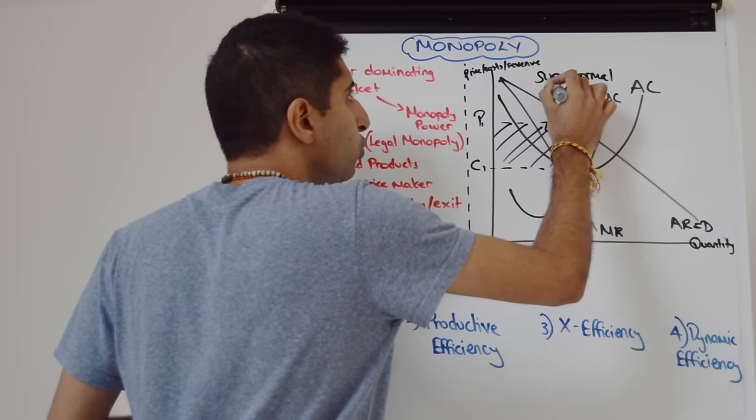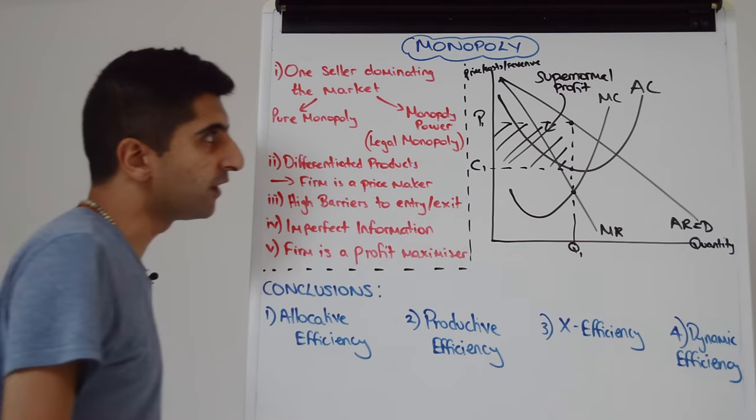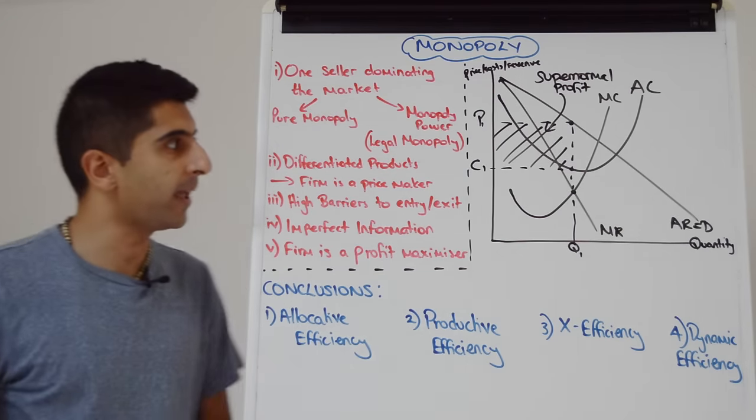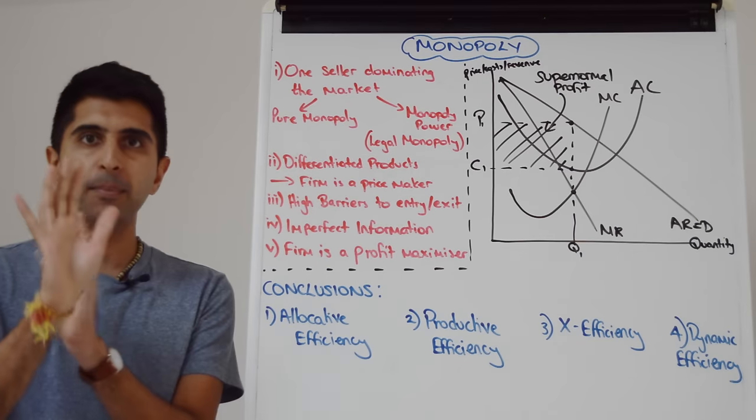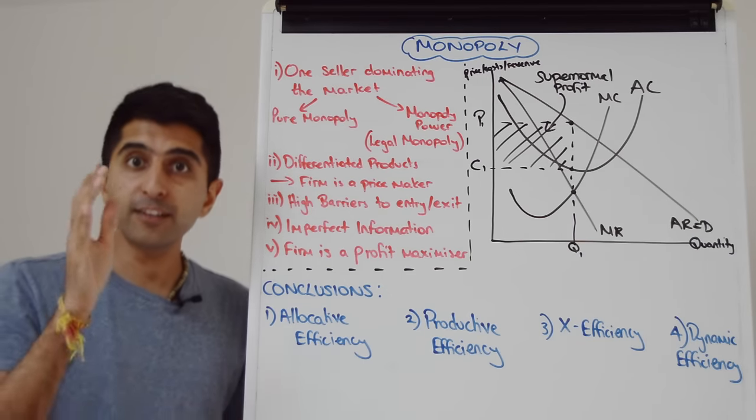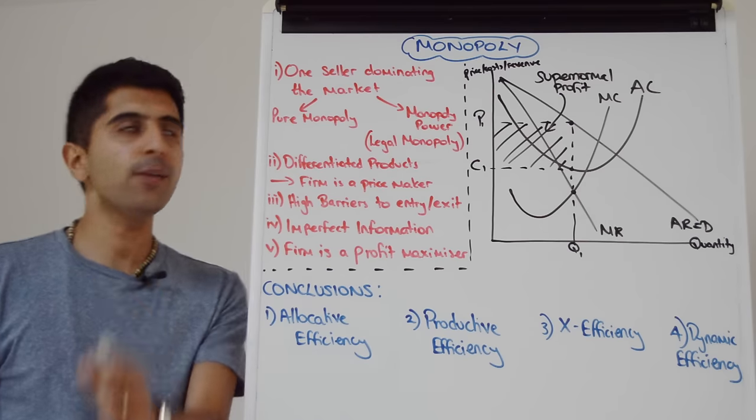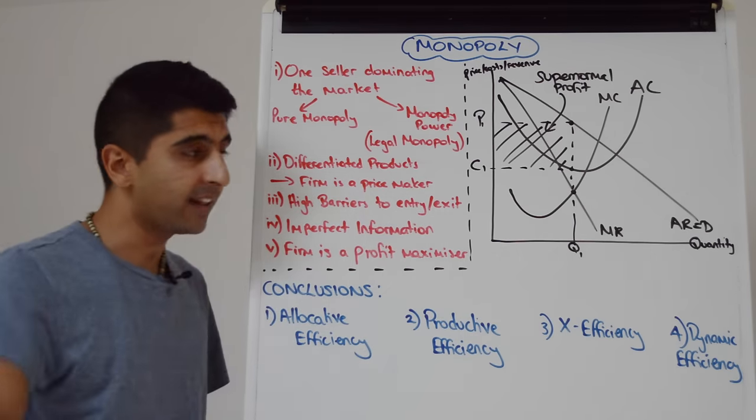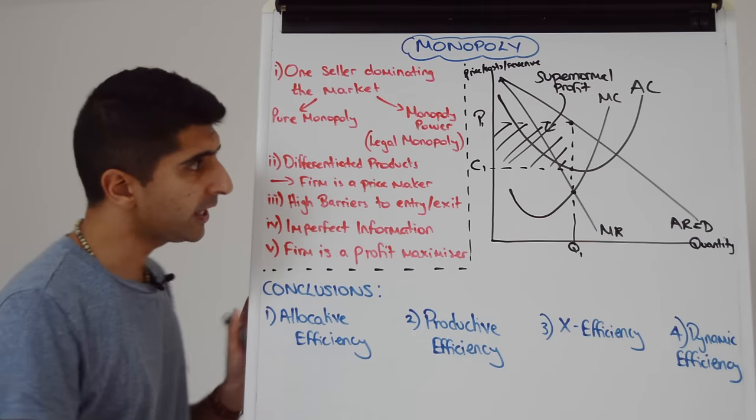That box is the area of total supernormal profit made by this monopolist. We need to label it as such. So there's our supernormal profit, the wonderful juicy supernormal profits that this monopoly is making. Now the diagram is complete. Fantastic. Now we need to look at analyzing and evaluating this market structure by efficiency analysis.